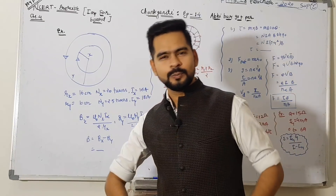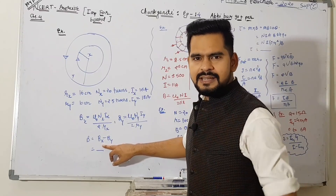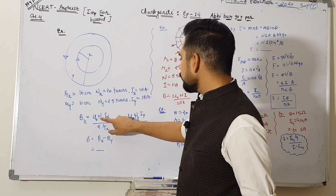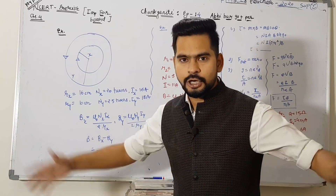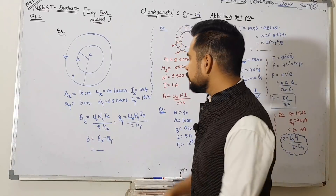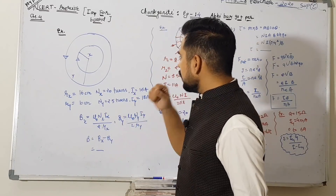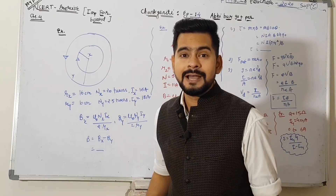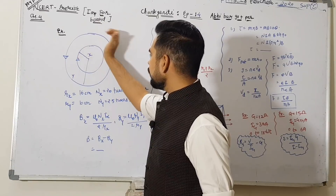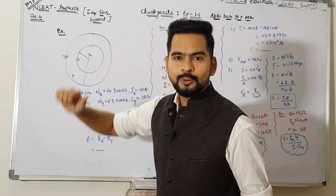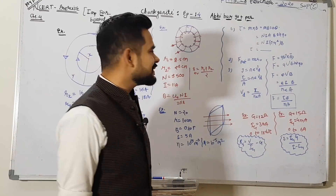Jis ka radius kam hoga, uski magnetic field zyada hogi - kyunki formula hai μ₀nI/2r: radius kam hoga toh magnetic field zyaada. Toh zyaada kaun hai - Bx. Isliye answer Bx minus By aata hai. Socho: agar dono mein direction same hota, toh dono anticlockwise hote, dono ka direction same direction hota, tab answer minus mein nahi hota, tab answer plus mein hota. Baccha Log, next dekhi.